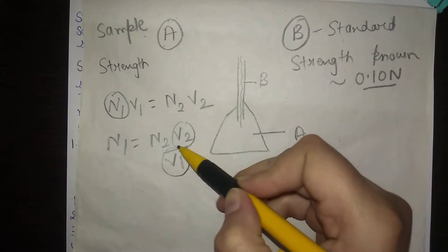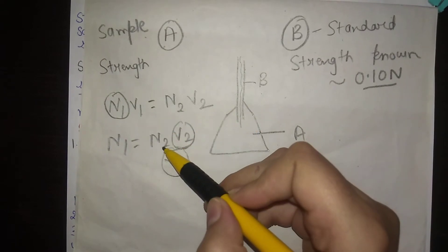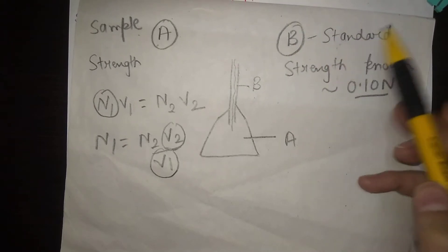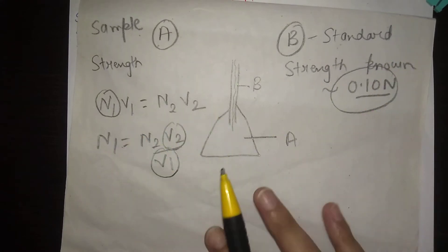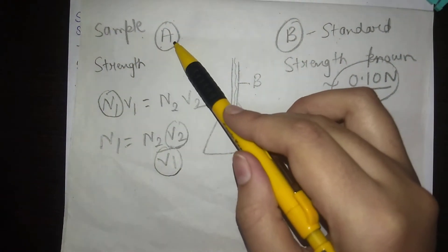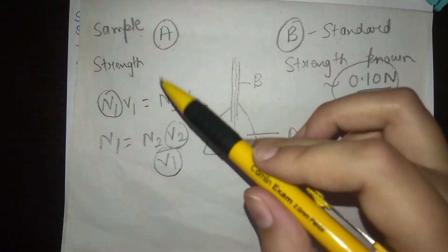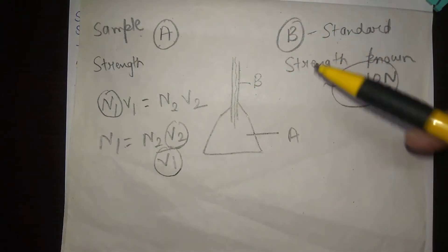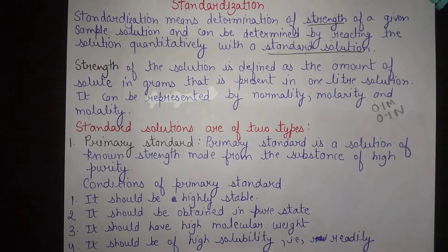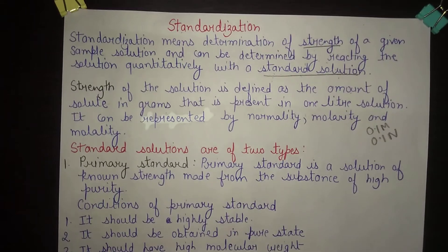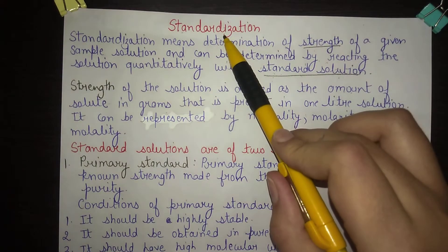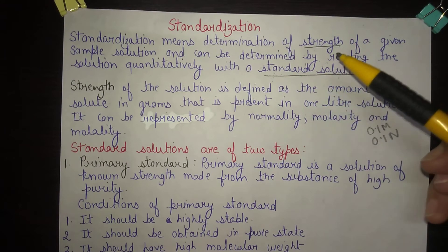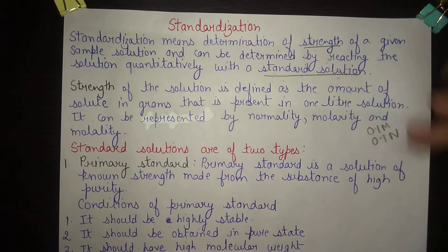The volumes V₁ and V₂ used in the titration can be measured, and N₂ is already known because solution B is the standard solution. Using this formula we can calculate the strength of sample solution A, and once we calculate its strength, sample solution A is standardized. This is how we standardize a sample solution by titrating it with the standard solution. Standardization means finding the strength of a solution by titrating it with a standard solution whose concentration is known.